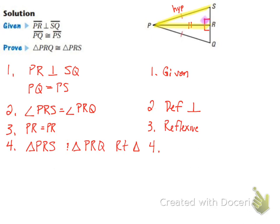When proving using hypotenuse leg, instead of just saying the right angles are equal, we need to say that the triangles are both right triangles. The reason is still definition of perpendicular, since PR is perpendicular to SQ. Then in the last step, since both triangles are right triangles and the hypotenuse and leg are equal, we can say triangle PRQ is congruent to triangle PRS by hypotenuse leg — just like SSS, SAS, ASA, or AAS, hypotenuse leg is another way of proving triangles equal.